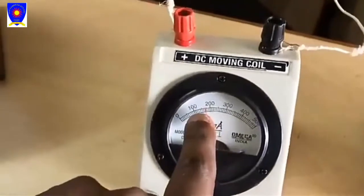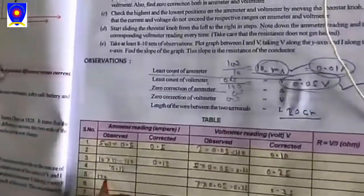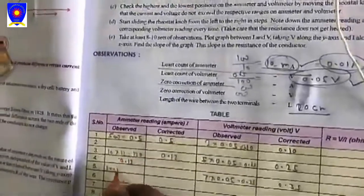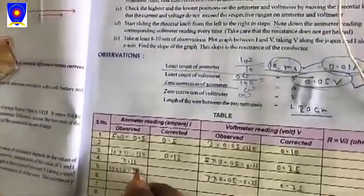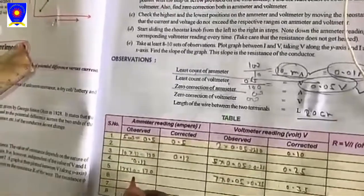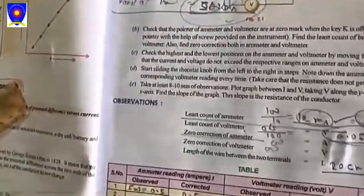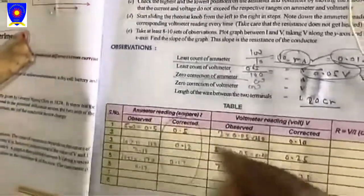For the ammeter, we are looking that its range is 17. Write here 17 into least count, which is 10, so it will be 170 milliampere. In ampere it will be 0.17. Corrected value will also be 0.17. Now we have three readings.